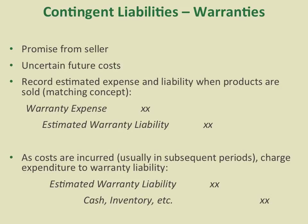Now let's talk about some contingent liabilities. The first one is warranty. Warranties are promises from the seller to the buyer for possible future deficiencies in products, generating uncertainty in terms of future cost to the seller. GAAP requires all firms that offer warranties to record estimated warranty expenses in the same period when products are sold — we debit warranty expenses and credit estimated warranty liability. This is consistent with the matching principle.